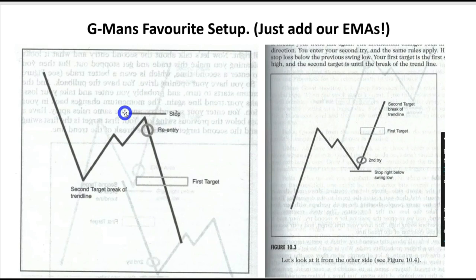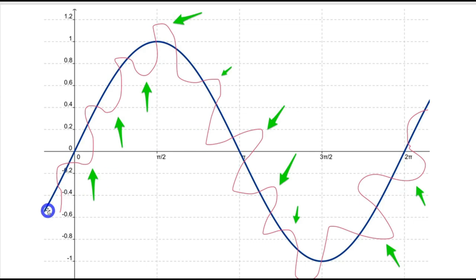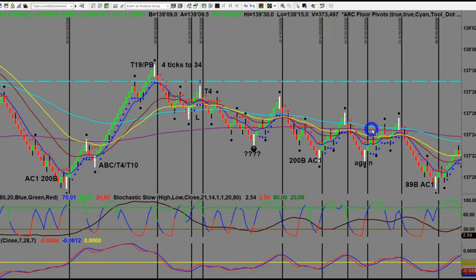This is written up in the excellent book by Mike Bellafiori called 'The Playbook.' Mike has also written 'One Good Trade.' As Gann said, there's nothing new under the sun — these sorts of setups have been around for years. When you combine that with trading in the direction of the trend, this is what gives you the house edge — the edge you're looking for as a trader. It makes a massive difference.